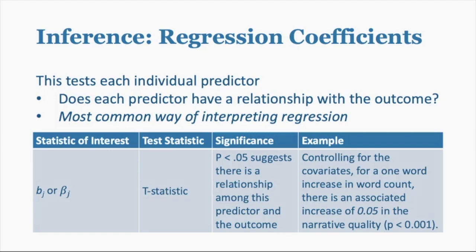The statistic of interest is usually B or standardized B. The test statistic in this case is a T statistic, which gives us a P-value. If it's below the threshold, it suggests there's a relationship between this predictor and the outcome. For example: controlling for the covariates, for a one-word increase in word count, there's an associated increase of 0.05 in narrative quality.